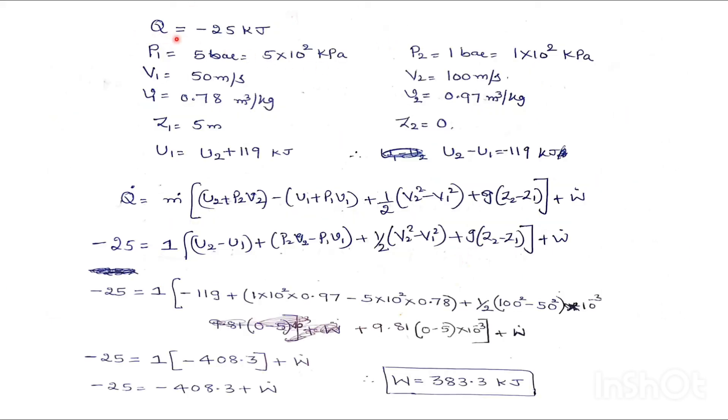Q is, heat is flowing out of the device. Definitely it will be minus only, minus 25 kilo joules. Pressure P1 is given in bar, we have converted it in kilo Pascal. Velocity V1 is given 50 meters per second. Specific volume he has given. Z1 is equals to 5 meter.